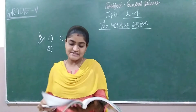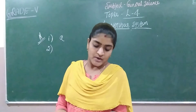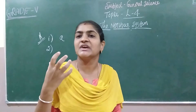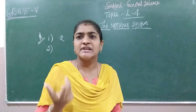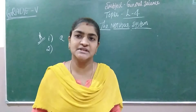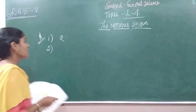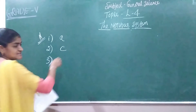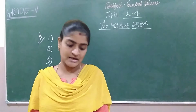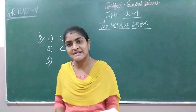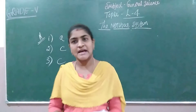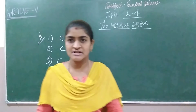Second question: which of these keeps the eye clean and moist? The options are eyelids, eyelashes, and tears. The answer is C — tears — because of tears only, the eye will become very wet. Eyelashes and eyelids prevent dust particles, but tears keep the eye always in moist condition. Third question: which of the following nerves carry the message from the brain? Answer is C — mixed nerve — because it sends information to and from the brain, performing both functions.